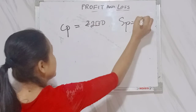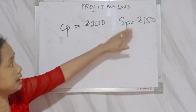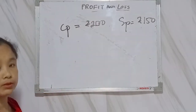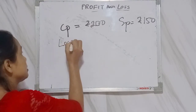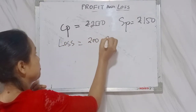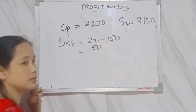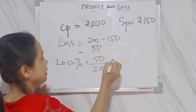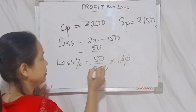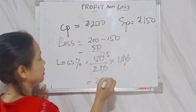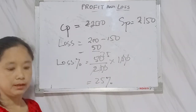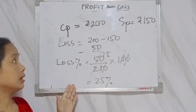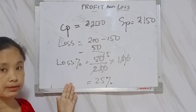When there is loss: suppose cost price is 200 rupees and selling price is 150 rupees. Here the selling price is less than the cost price, so there is a loss. The item bought for 200 is sold for 150. Loss = CP − SP = 200 − 150 = 50 rupees. Loss percent = 50 ÷ 200 × 100 = 25 percent. This is how you find the loss or profit percent.